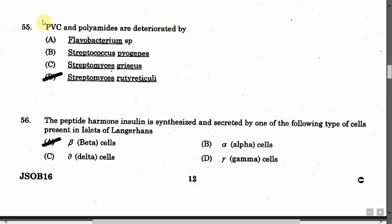The next question is: PVC and polyamides are deteriorated by — Option A: Flavobacterium species. Option B: Streptococcus pyogenes. Option C: Streptomyces griseus. Option D: Streptomyces verticillus. The correct answer is Option D.